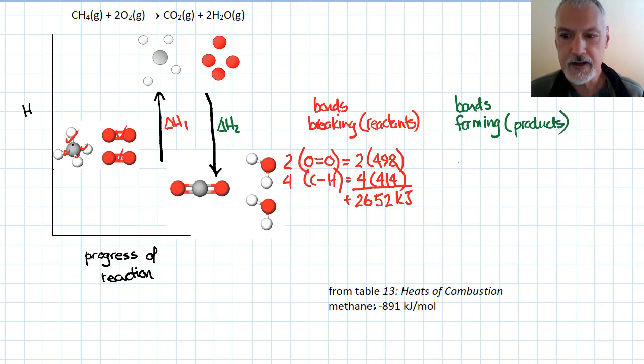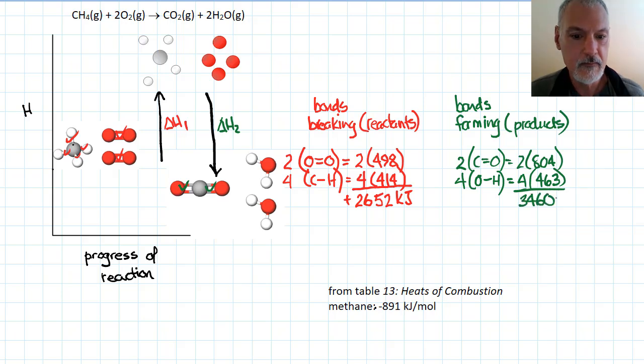So the bonds that I'm forming, two carbon-oxygen double bonds. And they're 804 each. And four oxygen-hydrogen bonds. So four times 463. Add those together. And as mentioned earlier, we release energy during the formation of a bond. So this step here is a negative value.